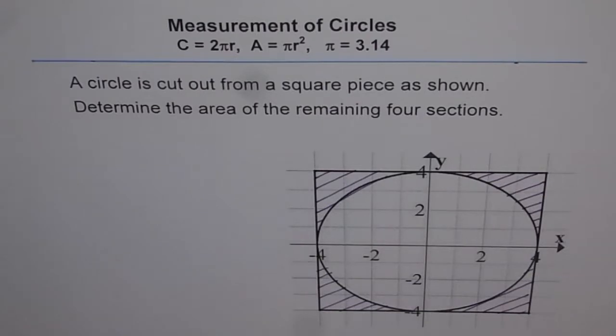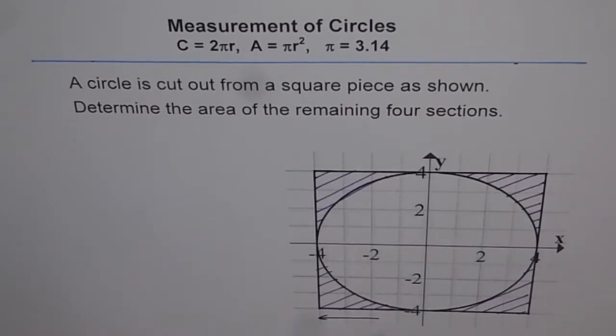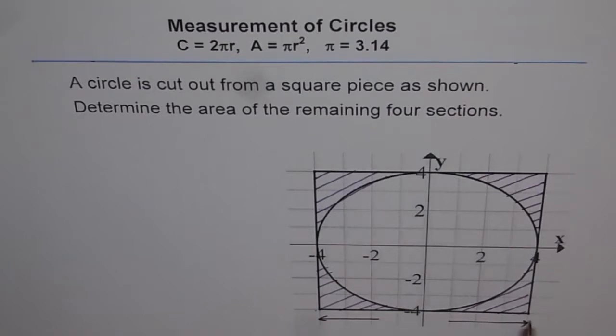Now, to find the area of the sections left, once you take away the circle from the square, what we need to do? First, let's find the area of square. So what are the dimensions of the square? So the dimensions of the square is, let's see, how much is this? It is from minus four to plus four, that means it is eight units.